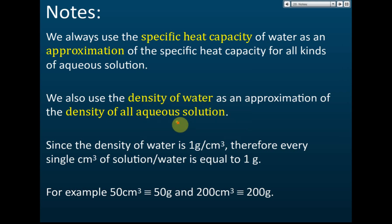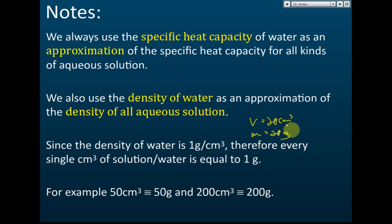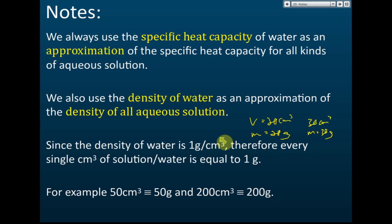Since the density of water is 1 g/cm³, every 1 cm³ equals 1 gram. Therefore, if the volume is 20 cm³, the mass is 20 g; if 30 cm³, then 30 g; if 50 cm³, then 50 g; if 200 cm³, then 200 g. We can do the conversion straight away because the density of water is 1 g/cm³, making calculations very fast.